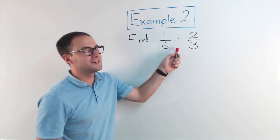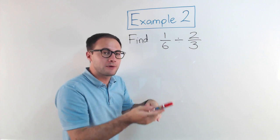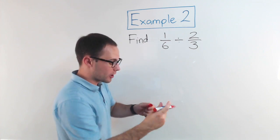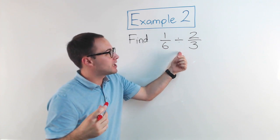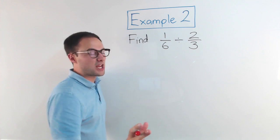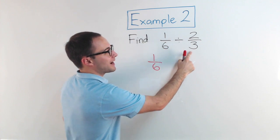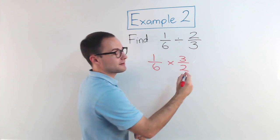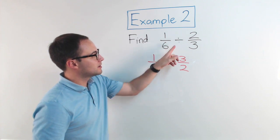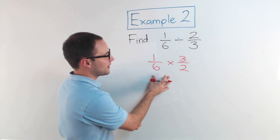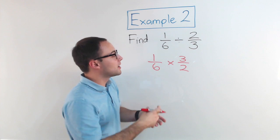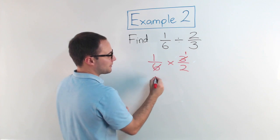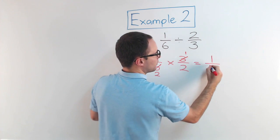Example number two: find one-sixth divided by two-thirds. Dividing by a fraction is the same thing as multiplying by its reciprocal. One way to remember this is keep, change, flip. So one-sixth — I keep it. Dividing changes to multiplying, and the reciprocal of two-thirds is three-halves. Keep, change, flip. Now this is just a simple multiplying fractions problem. Always try to simplify first — three and six have a common factor of three, so that becomes one and that becomes two. Multiply straight across and I get one-fourth.